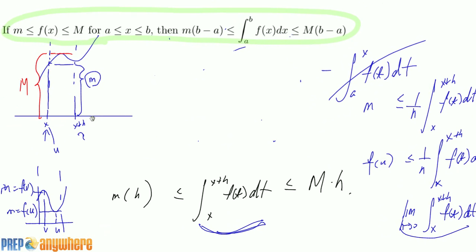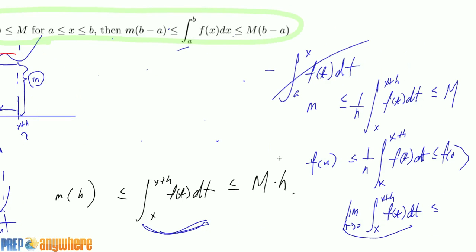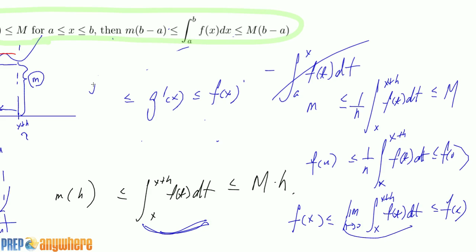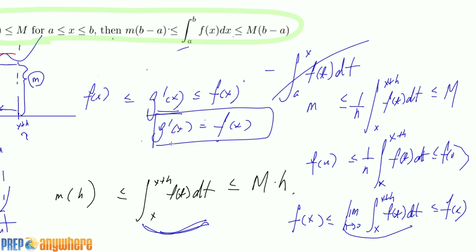What happens as h approaches 0? Both u and v are squished between x and x+h, so as h→0 this interval gets really, really skinny, and both u and v are going to approach x. So by the squeeze theorem, f(u) and f(v) both approach f(x), and the center expression g'(x) is squeezed to equal f(x). I just proved it — that's the Fundamental Theorem of Calculus.